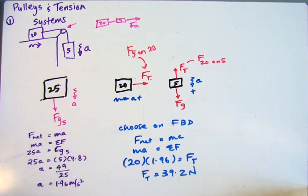Then we had to break it down into the two individuals. We picked the one we liked better, happened to be this one, and we found the tension force. We could have picked this one, and we would have just had to do the Fg minus Ft, and we would have gotten the same answer doing it that way.